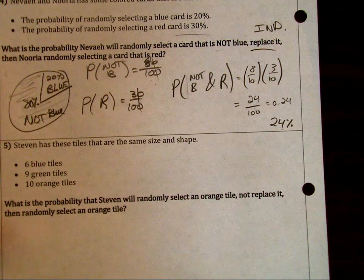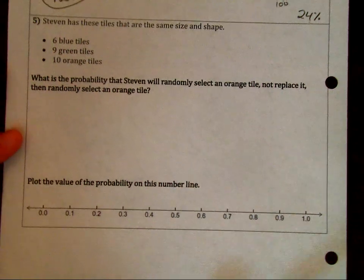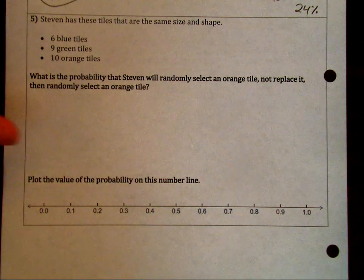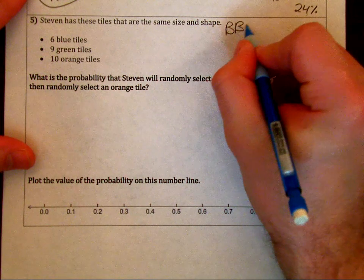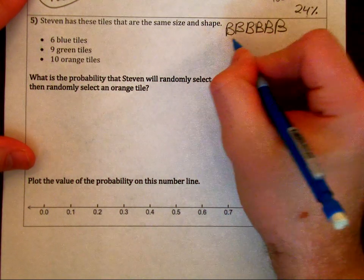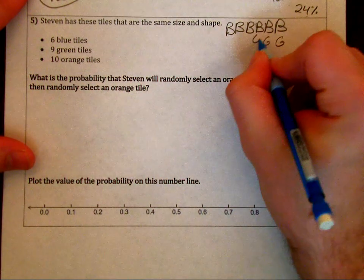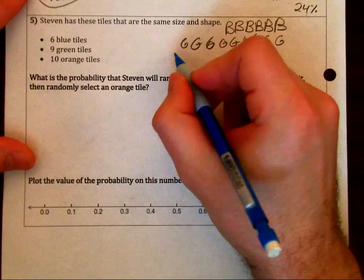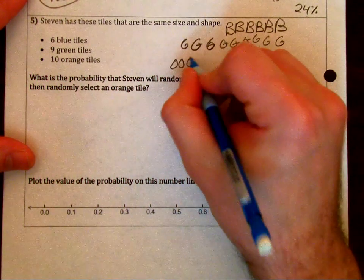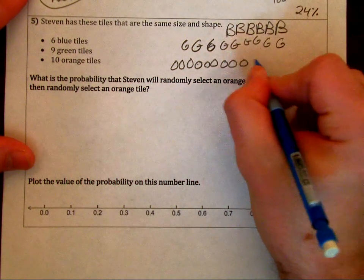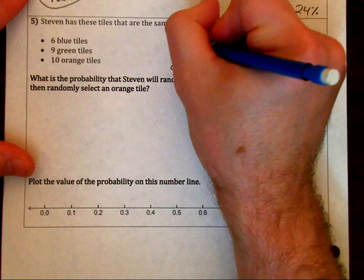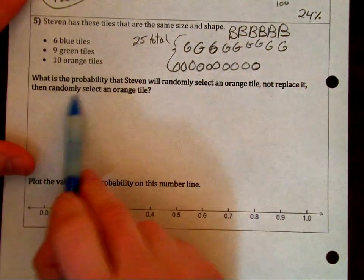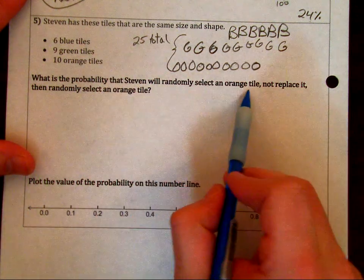And then the very last one, it says Stephen has tiles of the same size and shape. Let me draw these out quickly. We have six blue tiles, nine green tiles, and ten orange tiles. So that means in total we have 25. It says what is probability that Stephen will randomly select an orange tile and not replace it? So that means it's going to be dependent. And dependent does change the denominator.